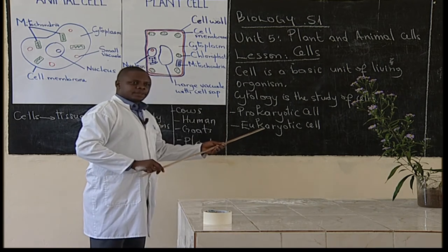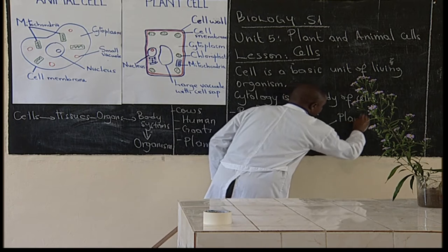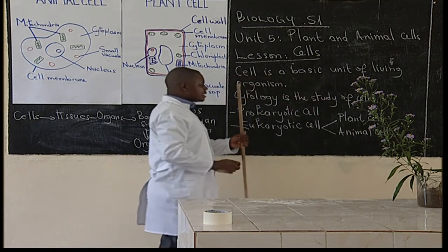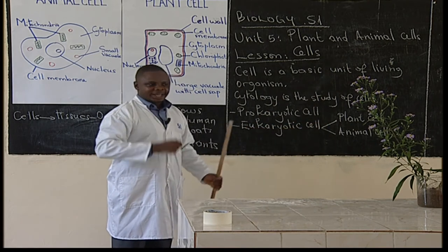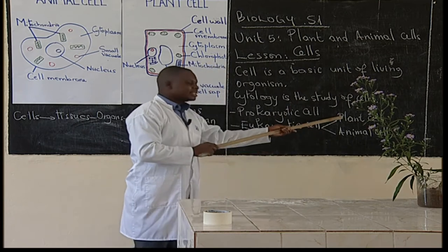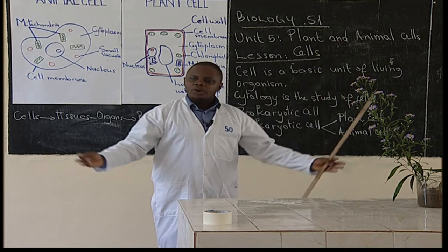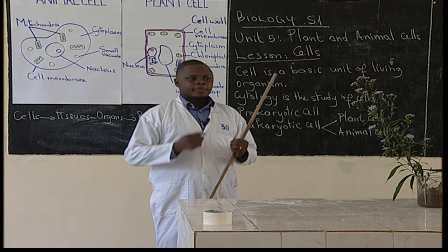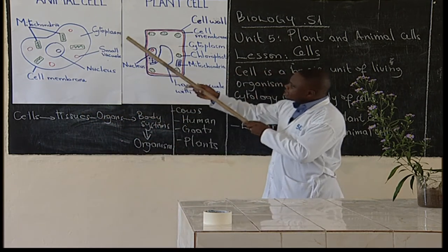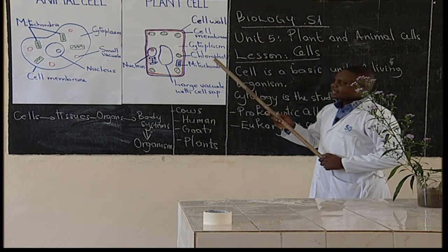When we go to eukaryotic cells, we have two more types: plant cells and animal cells. These are cells which have a true nucleus. This plant has cells called plant cells. You and I have cells called animal cells. This is the animal cell and this one is the plant cell. Let us start with the animal cell.